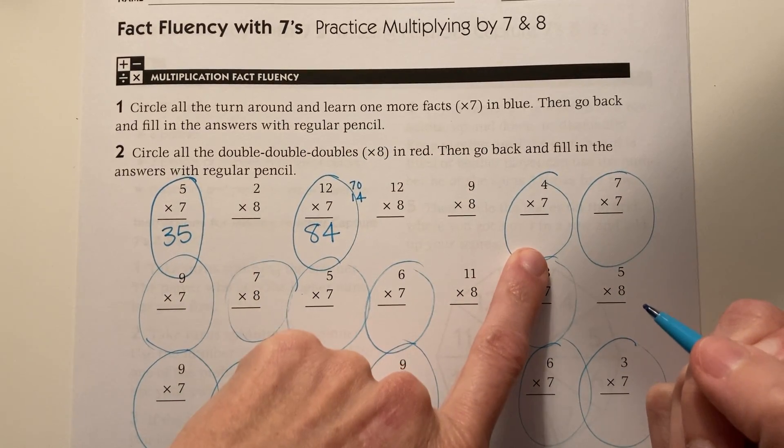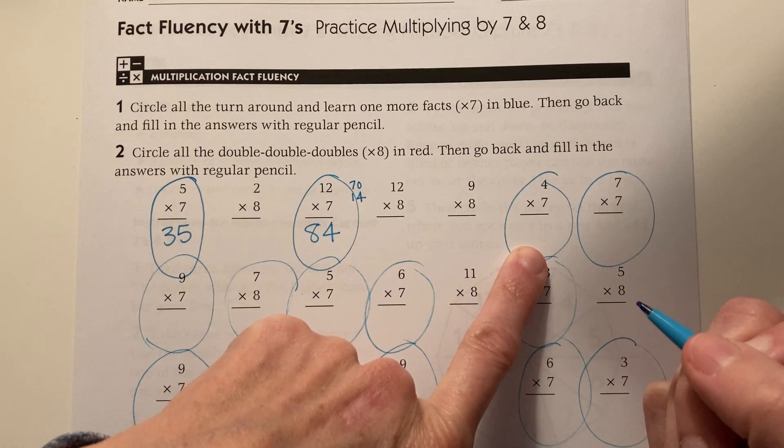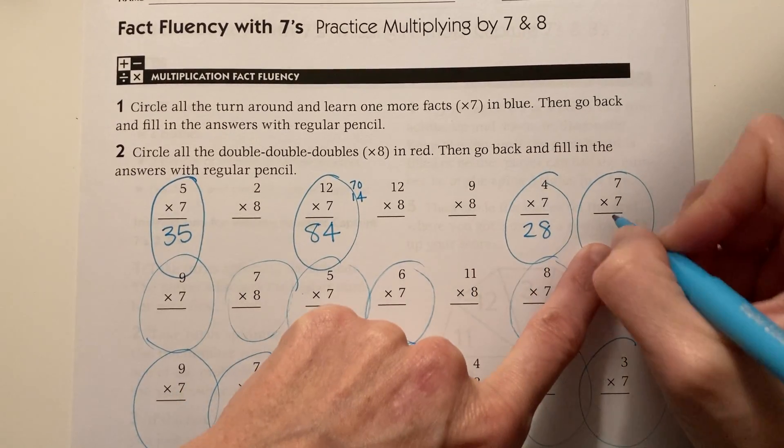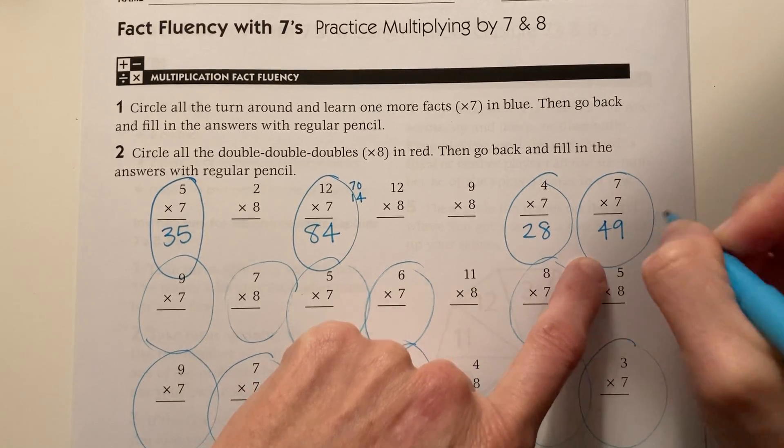Four times seven, I could use the double double strategy. Double seven and I get fourteen. Double that again, get twenty-eight. Seven times seven is the only one you just have to memorize.